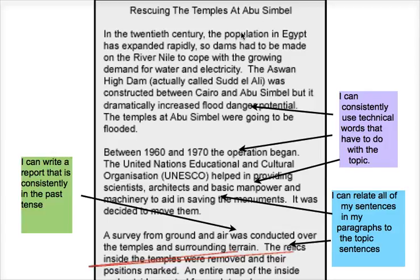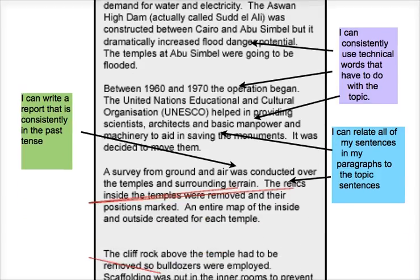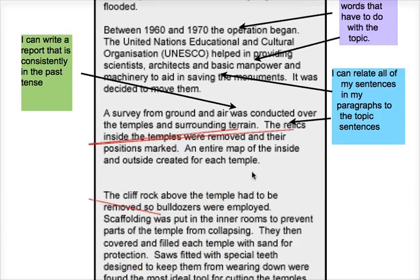So I'll give you some examples here: Population, Egypt, Aswan High Dam, Cairo, Operation, Educational and Cultural Organization, Manpower. We'll go down further — Temple, Cliff rock, Bulldozers, Scaffolding. You get the idea.